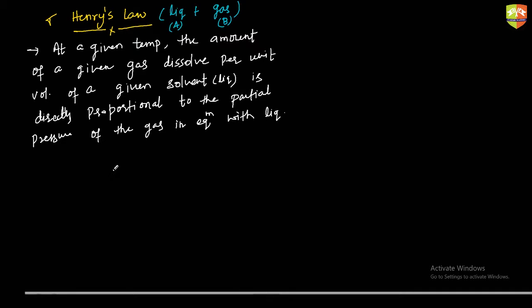In a given amount of liquid, the amount of gas dissolved depends upon the partial pressure of the gas. The gas with more partial pressure will dissolve more into the liquid. So the amount of gas dissolved into the solution increases if the partial pressure of the gas increases.